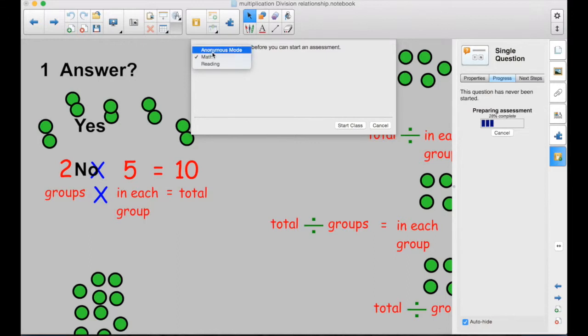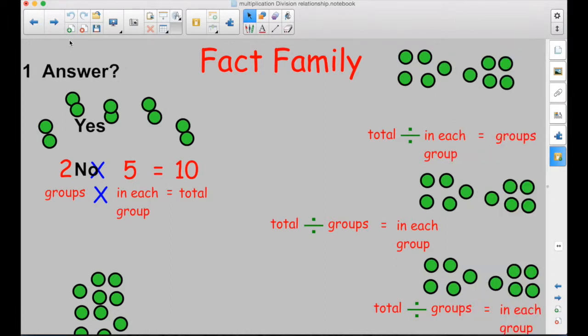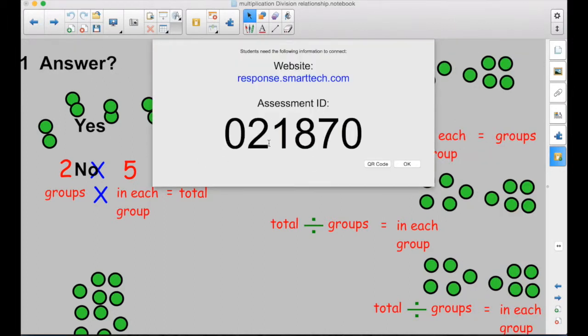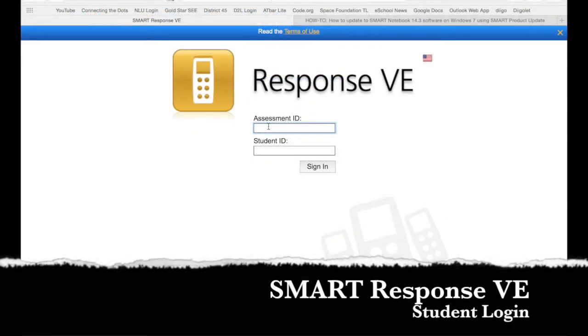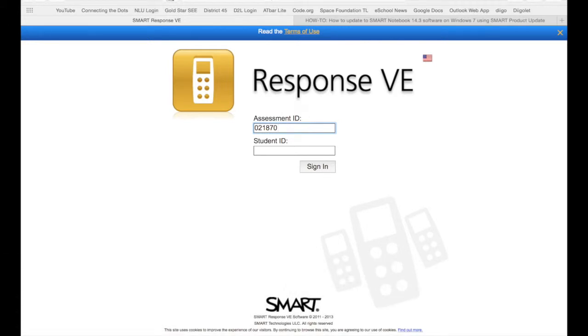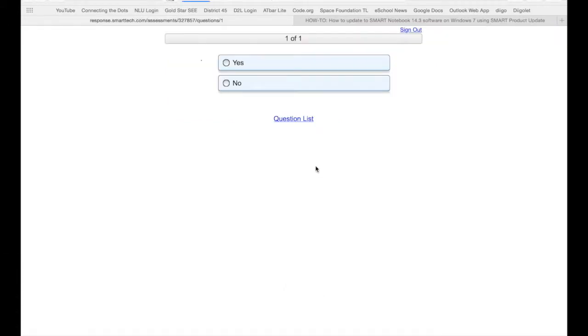So I have to start a class. I could start my math class and make them log in, or I could just do anonymous mode. With Smart Response VE, using the Chromebooks or iPads or any internet-connected device, they go in, put in the assessment ID. Since it was anonymous, they don't use the student ID, and they log in.